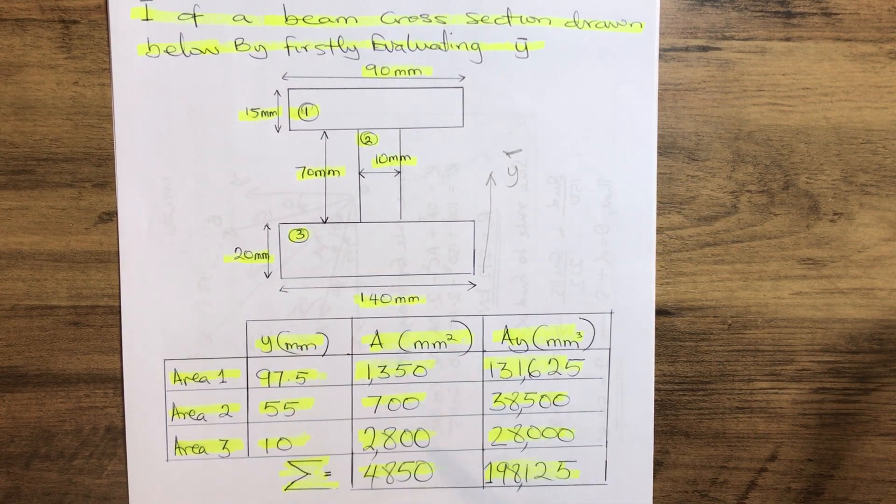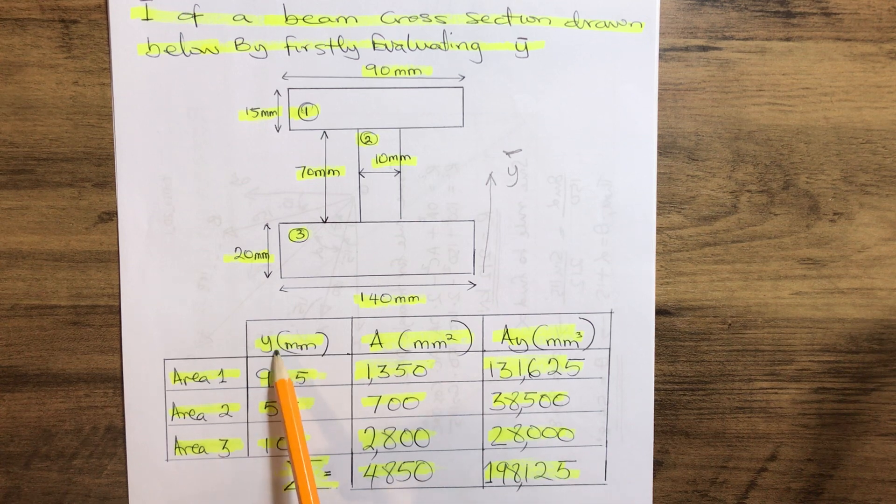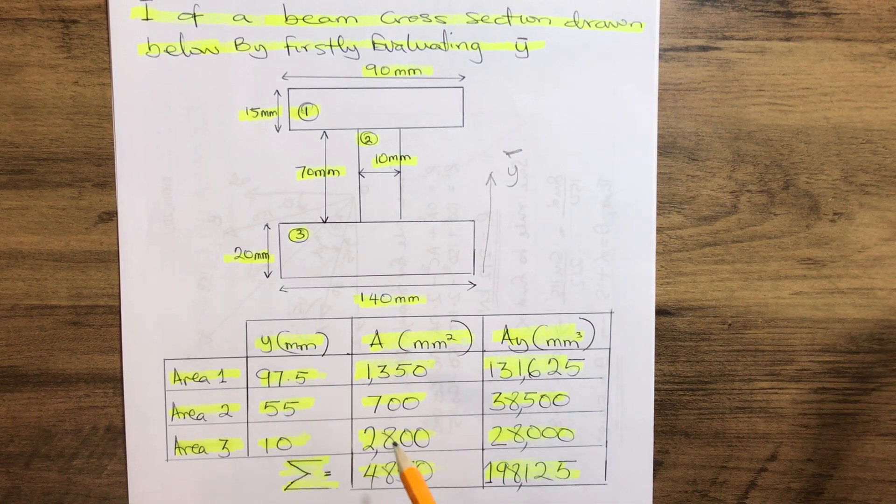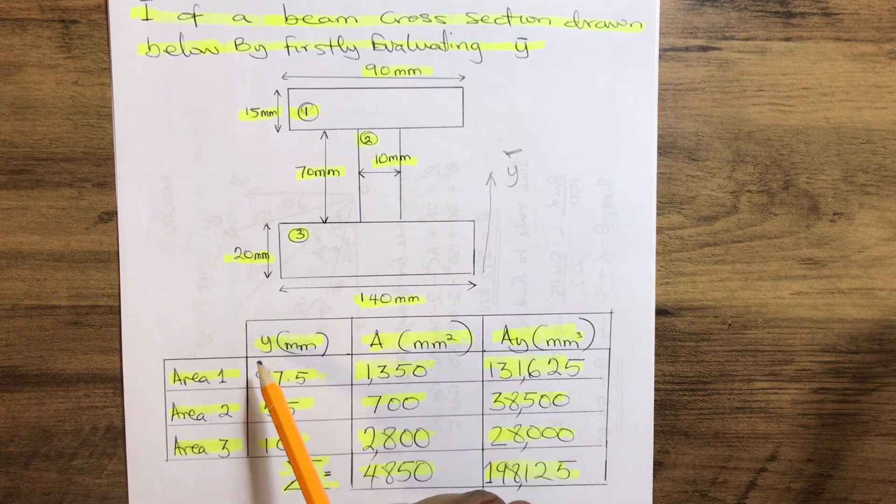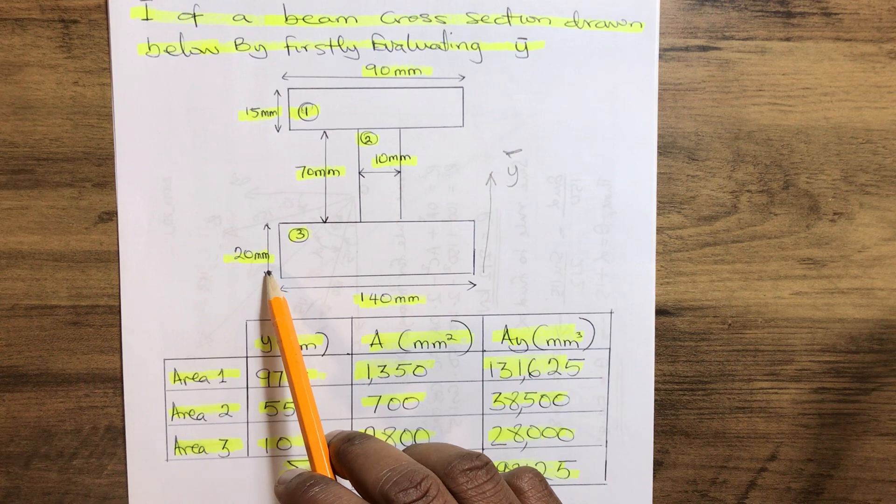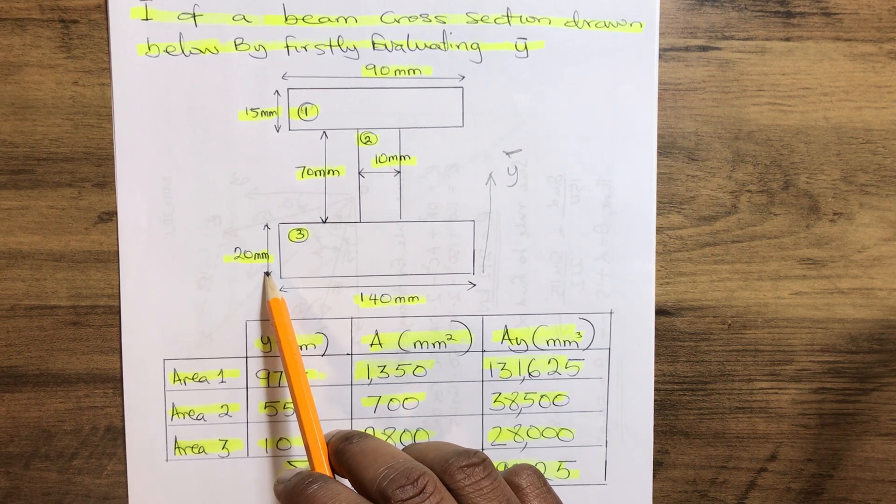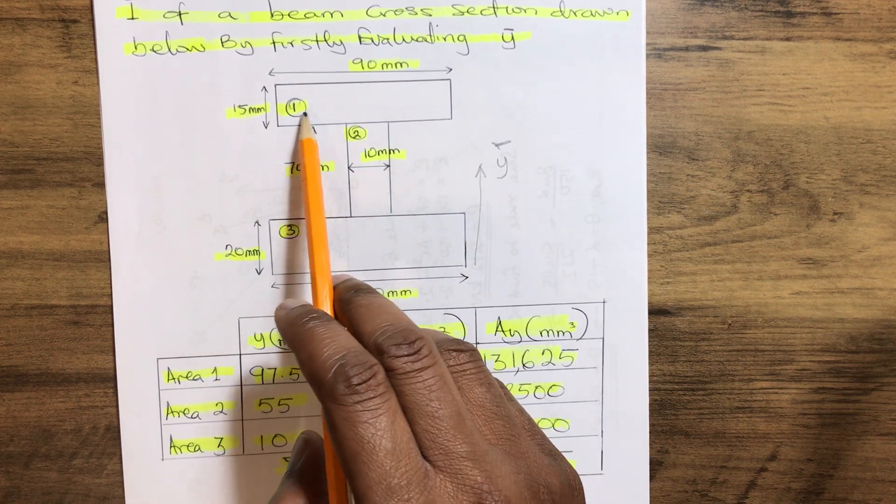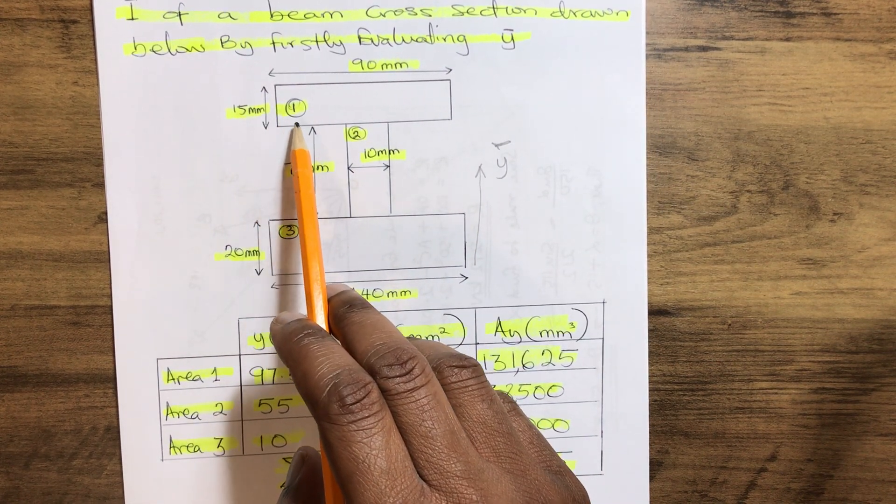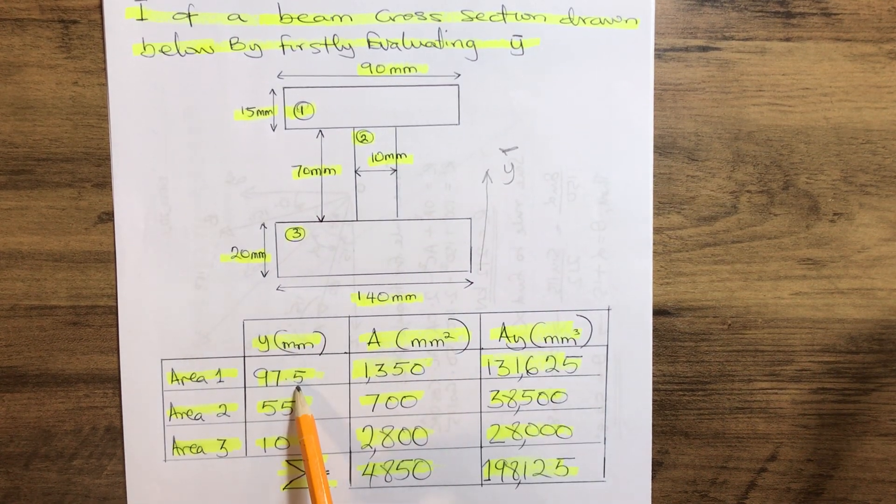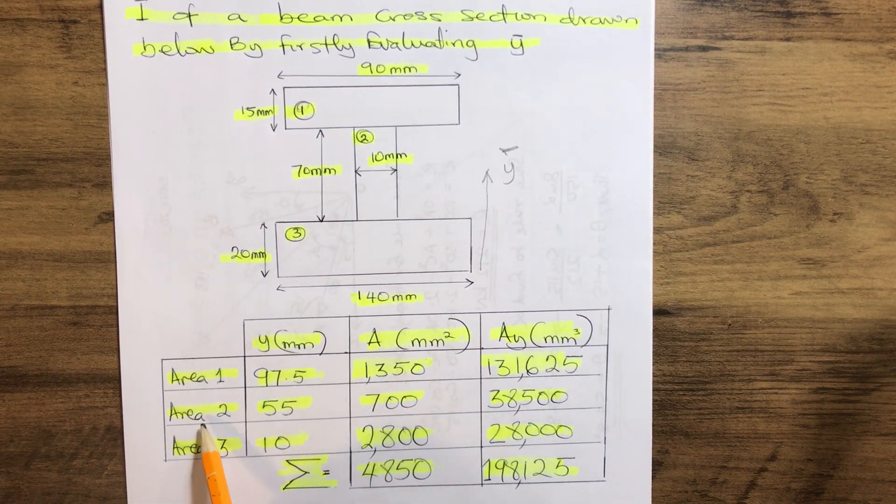Now first of all we calculate the Y in millimeters, which you're given. How do we calculate our Y for section 1? For section 1, we add the depth of the third section to the depth of the second to half of the depth of the top. That gives us 97.5.